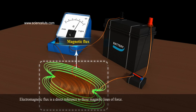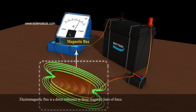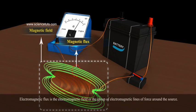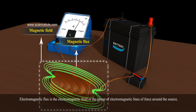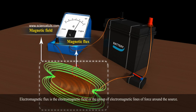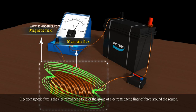Electromagnetic flux is a direct reference to those magnetic lines of force. It is the electromagnetic field, or the group of electromagnetic lines of force around the source.